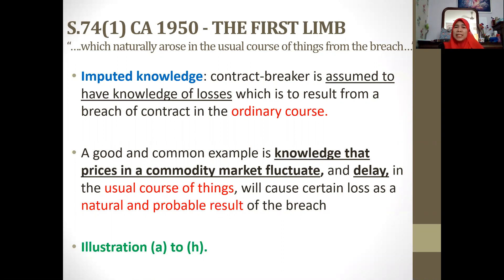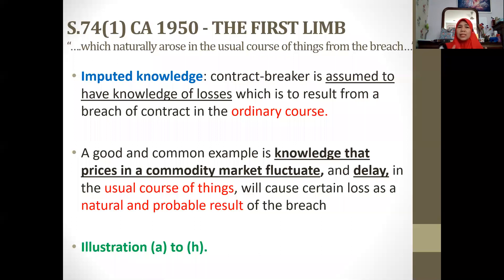For Part 2 of the lecture, we are going to look at the first limb — the requirements under the first limb, the illustrations, and the case law to illustrate the application of the subsection. From subsection one, the relevant part of the first limb is the words 'which naturally arose in the usual course of things from the breach.' The requirement is that the contract breaker is assumed to have knowledge of losses — this is what we call imputed knowledge — which is to result from a breach of contract in the ordinary course.